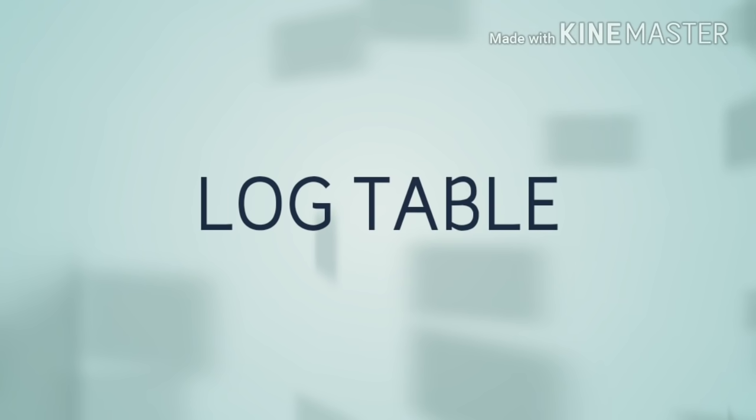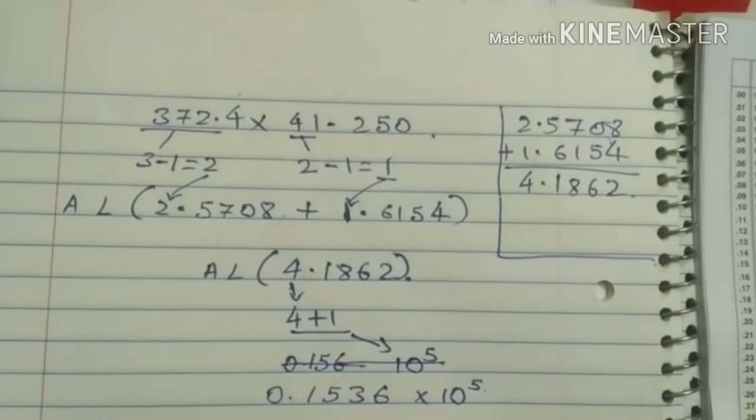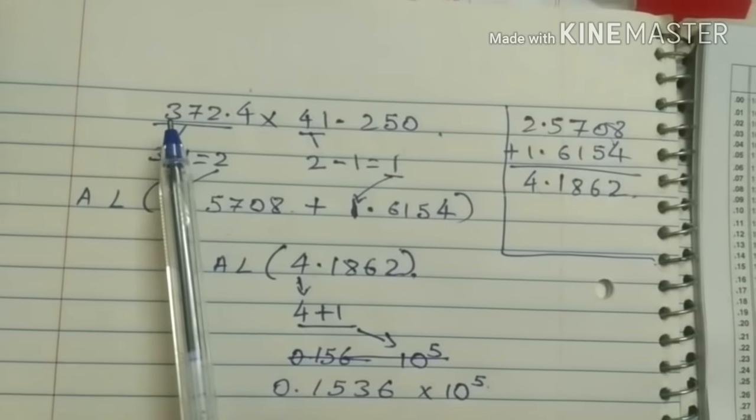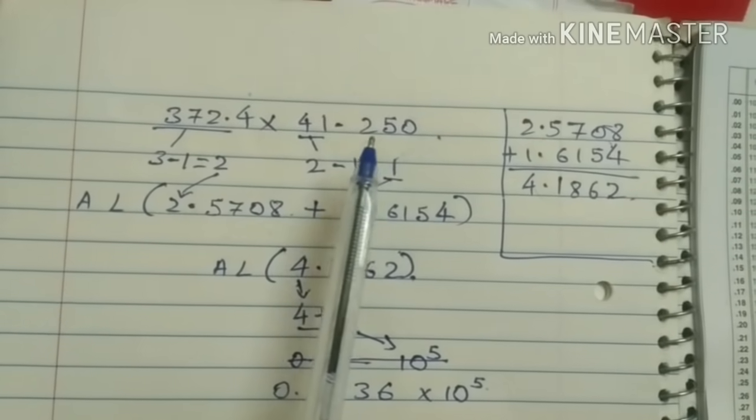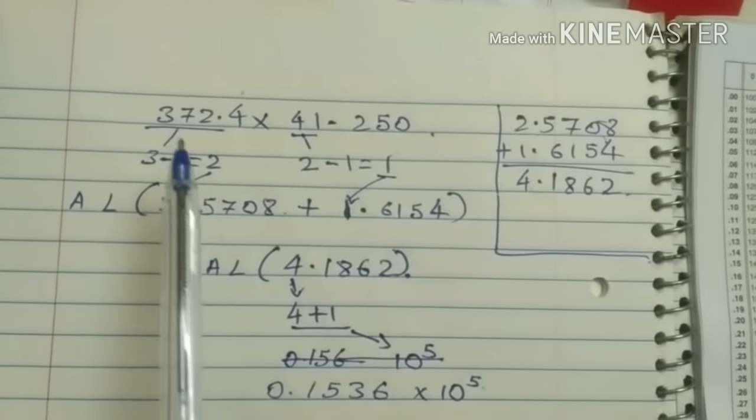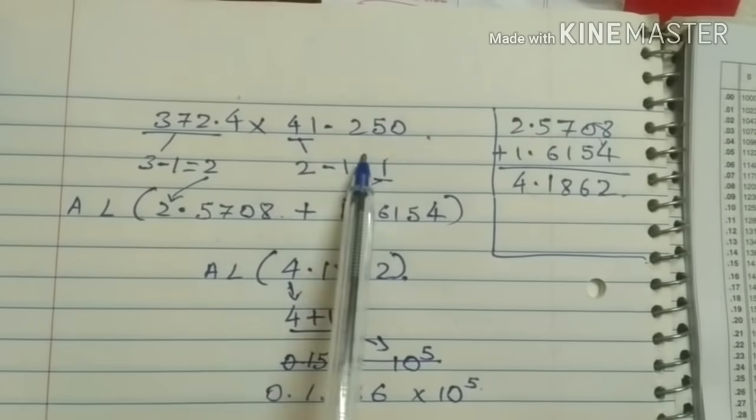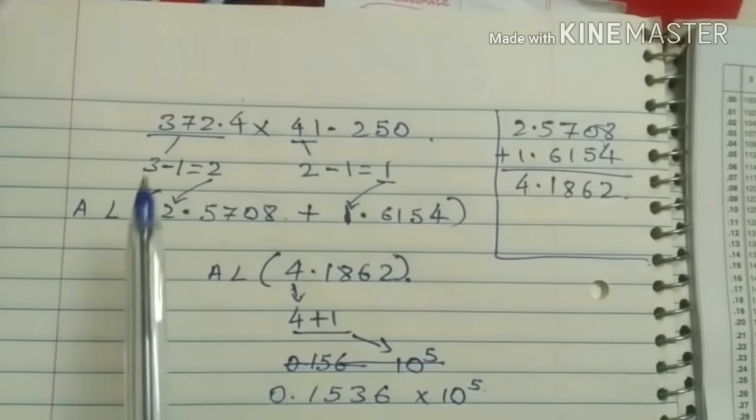Hi guys, today I am going to teach you how to find log table, how to use log table. So let's see, I will explain it with you some examples. First example is here, 372.4 x 41.250. We have to multiply it but as in log table we have to just add log of this number plus log of this number. After that we have to find antilog. So first see how to do it.